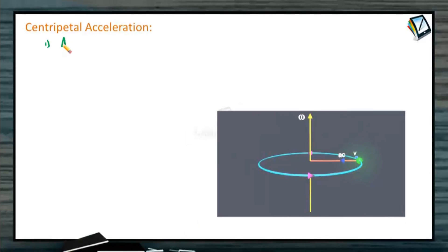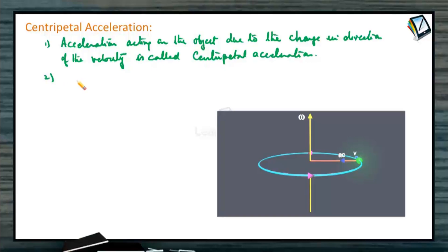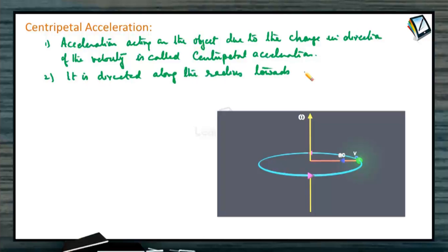First point for centripetal acceleration: acceleration acting on the object due to the change in direction of the velocity in uniform circular motion as well as in non-uniform circular motion is called centripetal acceleration. It always acts on the object along the radius towards the centre of the circular path. It is called centre-seeking acceleration.